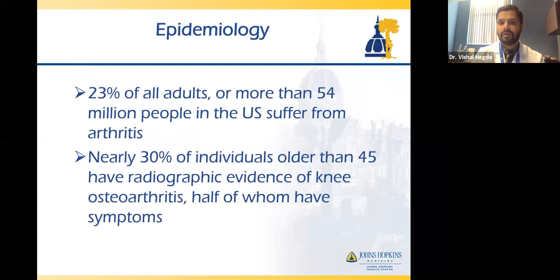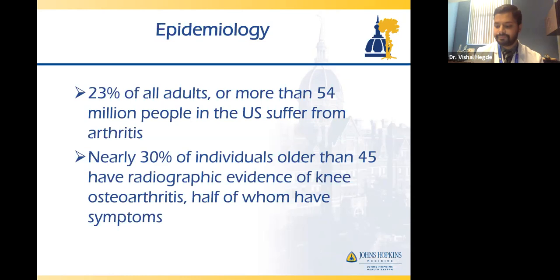Arthritis is very common. About 23% of all adults — more than 54 million people in the U.S. — suffer from arthritis. Almost 30% of people older than 45 have some evidence of arthritis on X-ray, though only about half of those have symptoms. That's still 15%, which is quite a few people.